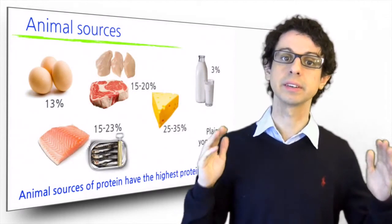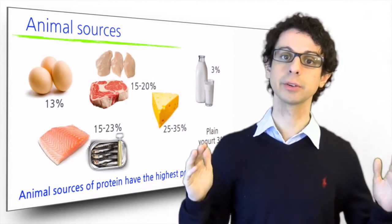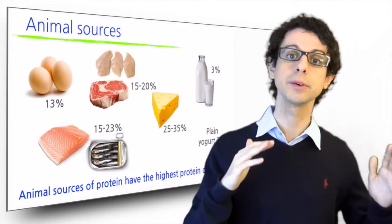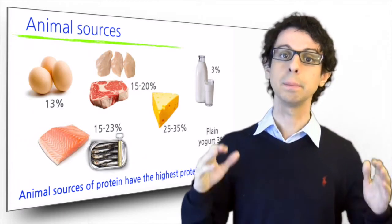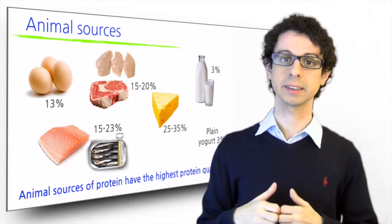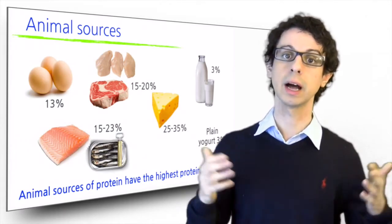The numbers you see here are percent weight. So 100 grams of eggs contains about 13 grams of protein. Meat 15 to 20 percent. Fish about the same. Tuna has a little bit more.